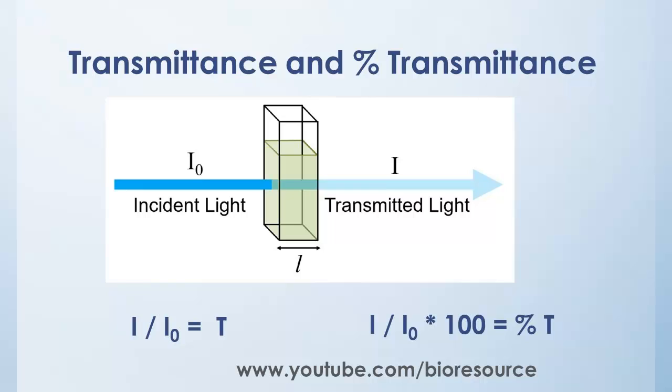The objects that appear colored absorb light at particular wavelengths and reflect the other parts of the visible spectrum. After absorption, the rest of the light is transmitted through the sample to the detector.